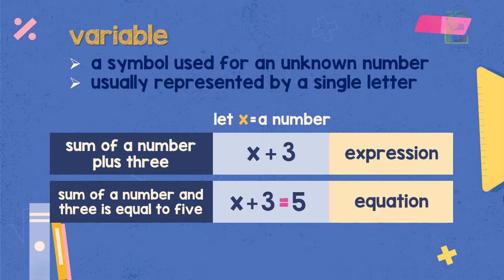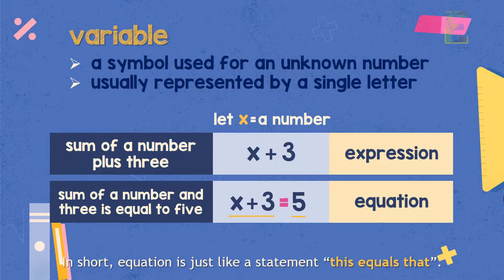Equation says that what is on the left, which is x plus 3, is equal to what is on the right, which is 5. In short, equation is just like a statement. This equals that.